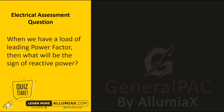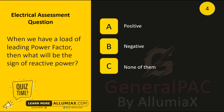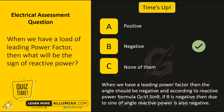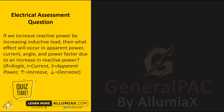When we have a load of leading power factor, what will be the sign of reactive power? A: Positive, B: Negative, C: None of them. Time's up. The answer is B: Negative. When we have a leading power factor, the angle should be negative, and according to the reactive power formula, if the angle is negative, then due to sine of the angle, reactive power is also negative.